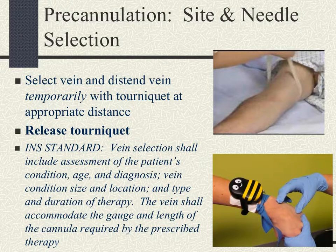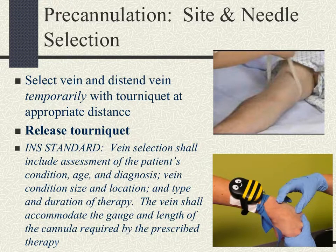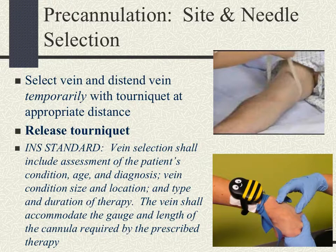After temporarily placing the tourniquet, release it while you're preparing the site. The INS standard says that vein selection shall include assessment of the patient's condition, age, and diagnosis, the vein condition, size, and location, and the type and duration of therapy. The vein shall accommodate the gauge and length of the cannula required by the prescribed therapy.